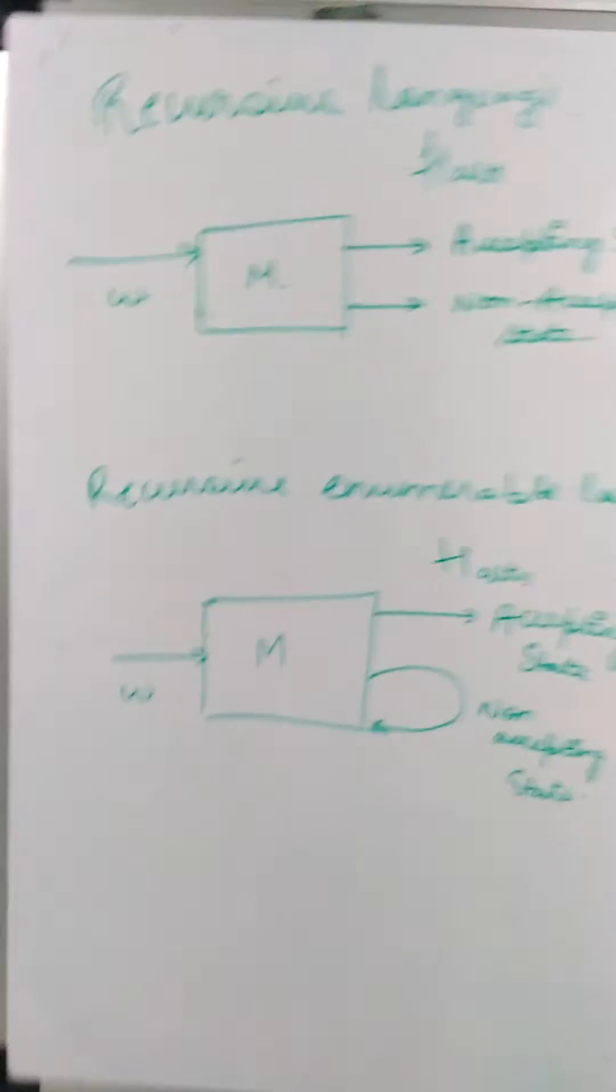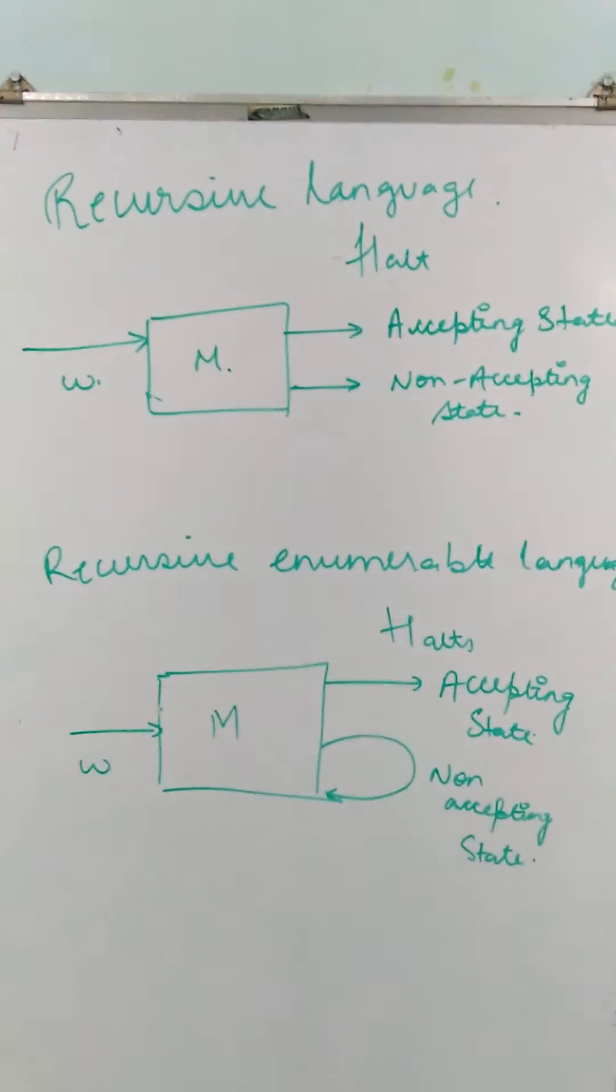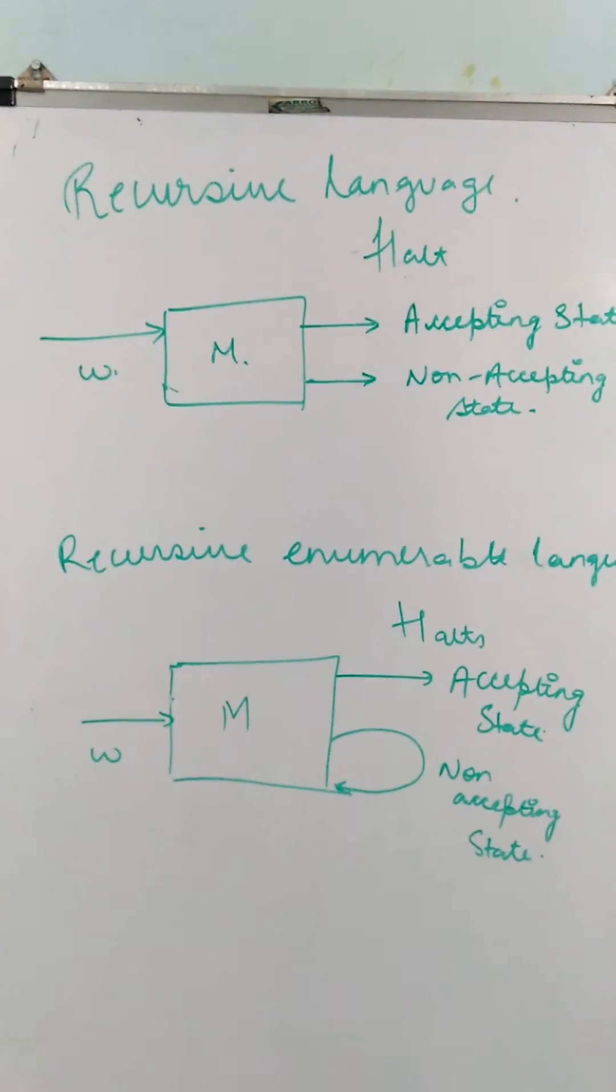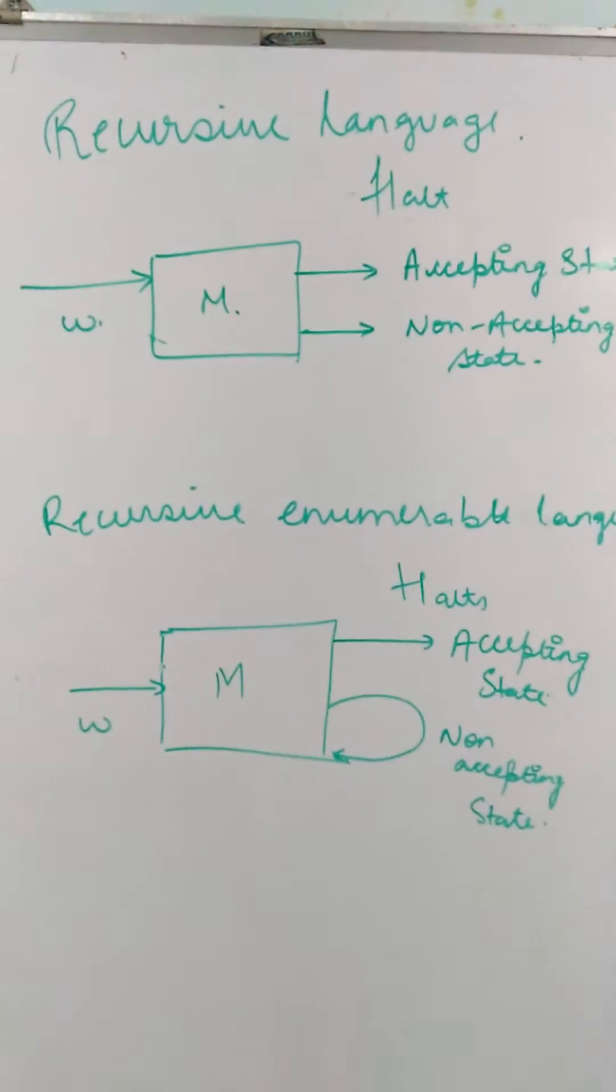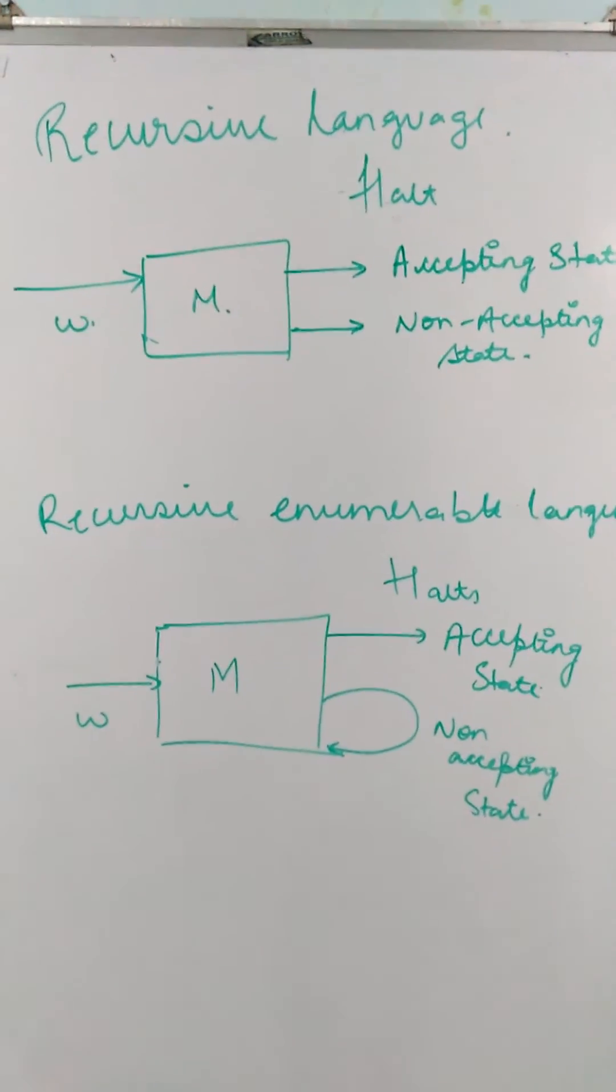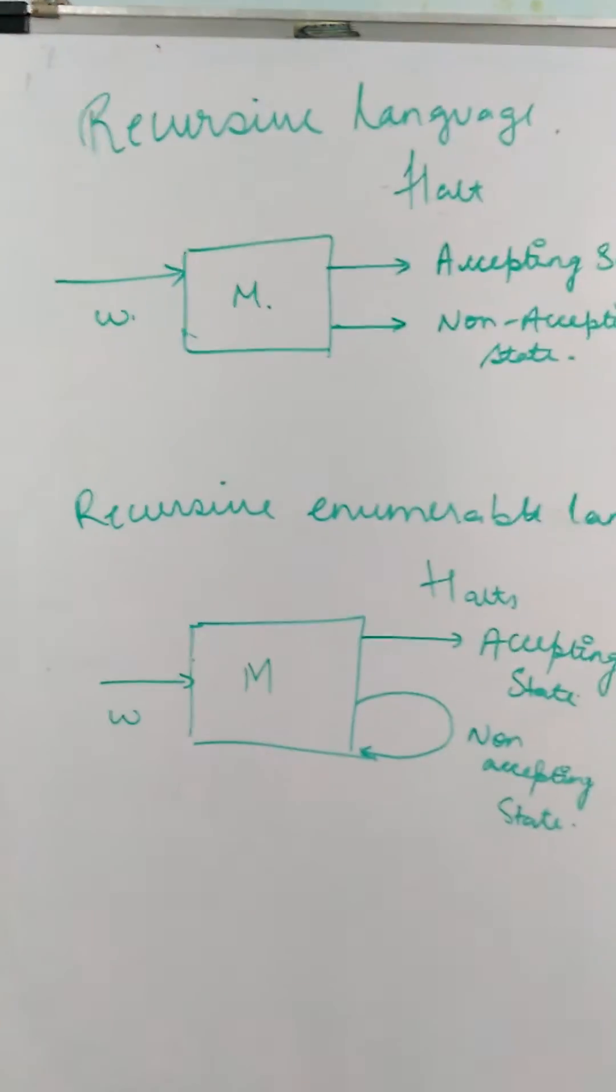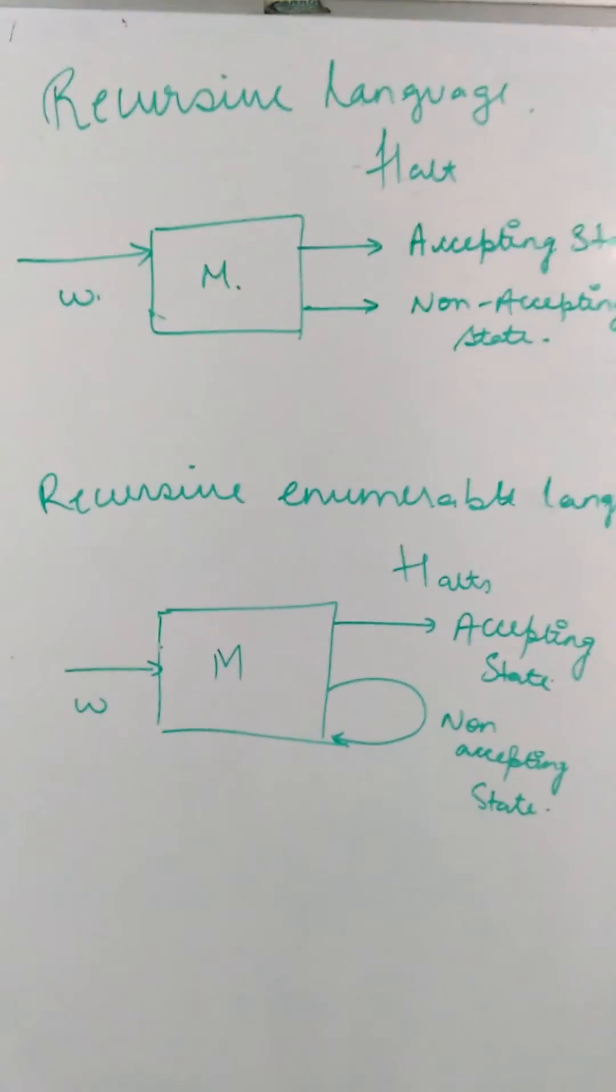If we have that algorithm which decides if an element belongs to a particular set, then we can say that it is a recursive language. In other words, if a Turing machine decides a language, then it is a recursive language.